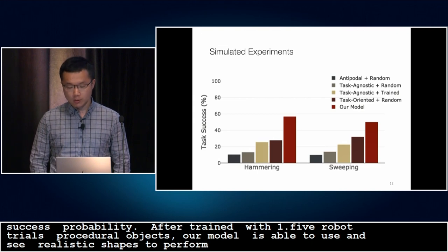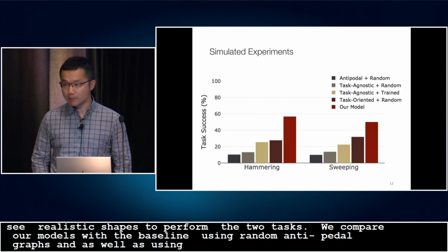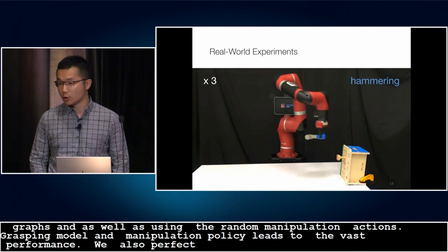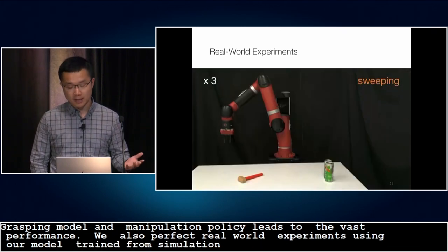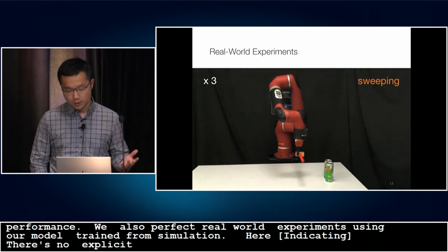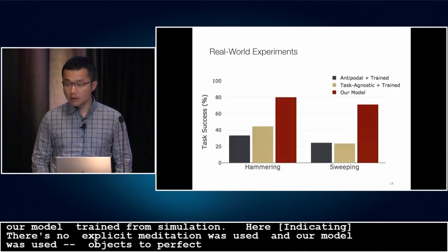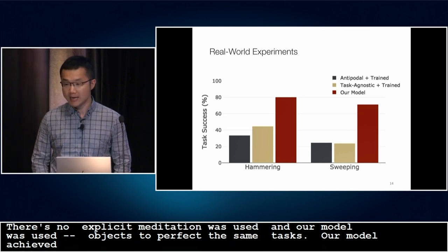We compare our models with baselines using random antipodal grasps and task-agnostic grasps, as well as baselines using random manipulation actions. We find that jointly learning the grasping model and the manipulation policy leads to the best performance. We also perform real-world robot experiments using our model trained from simulation, with no explicit sim-to-real domain adaptation. Our model achieves 80% and 71% task success rate for hammering and sweeping respectively, outperforming baselines using antipodal and task-agnostic grasps.